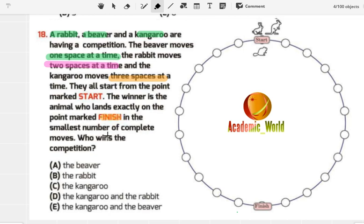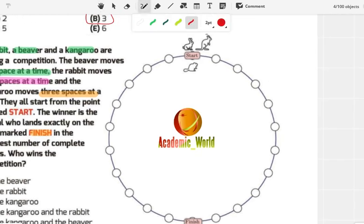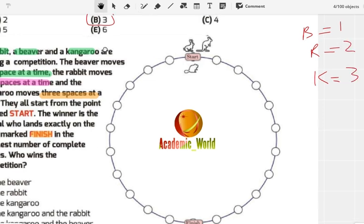Let me write here: B for beaver, R for rabbit, and K for kangaroo. B equals beaver that moves one space at a time, so B = 1. R = 2 and K = 3.